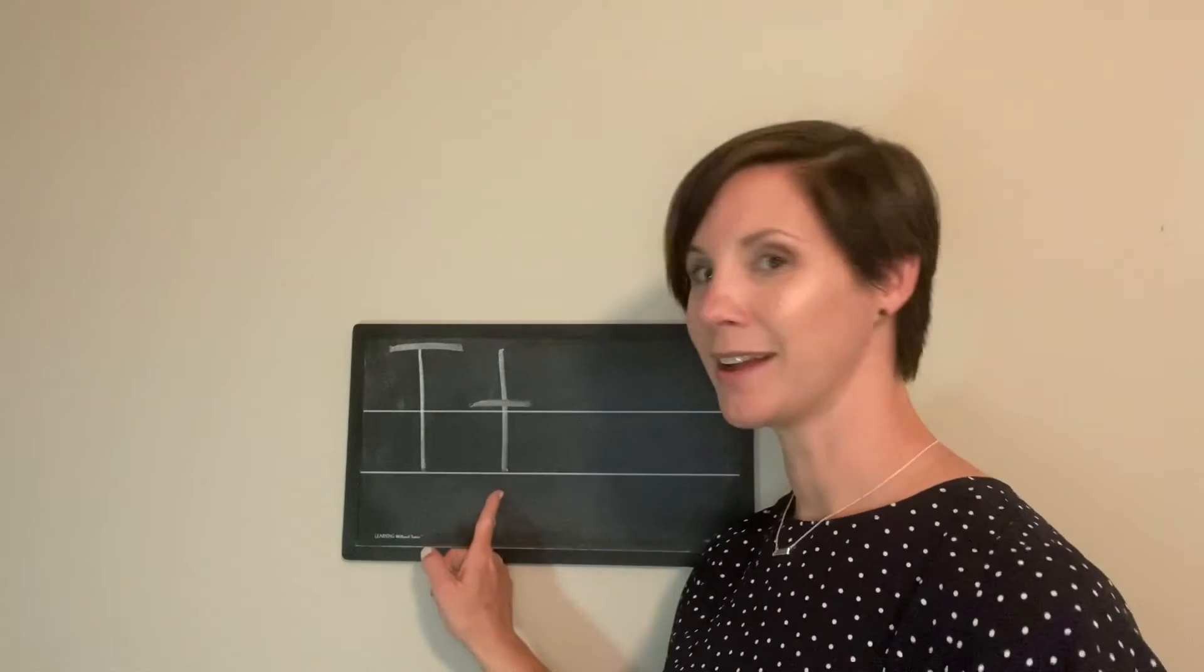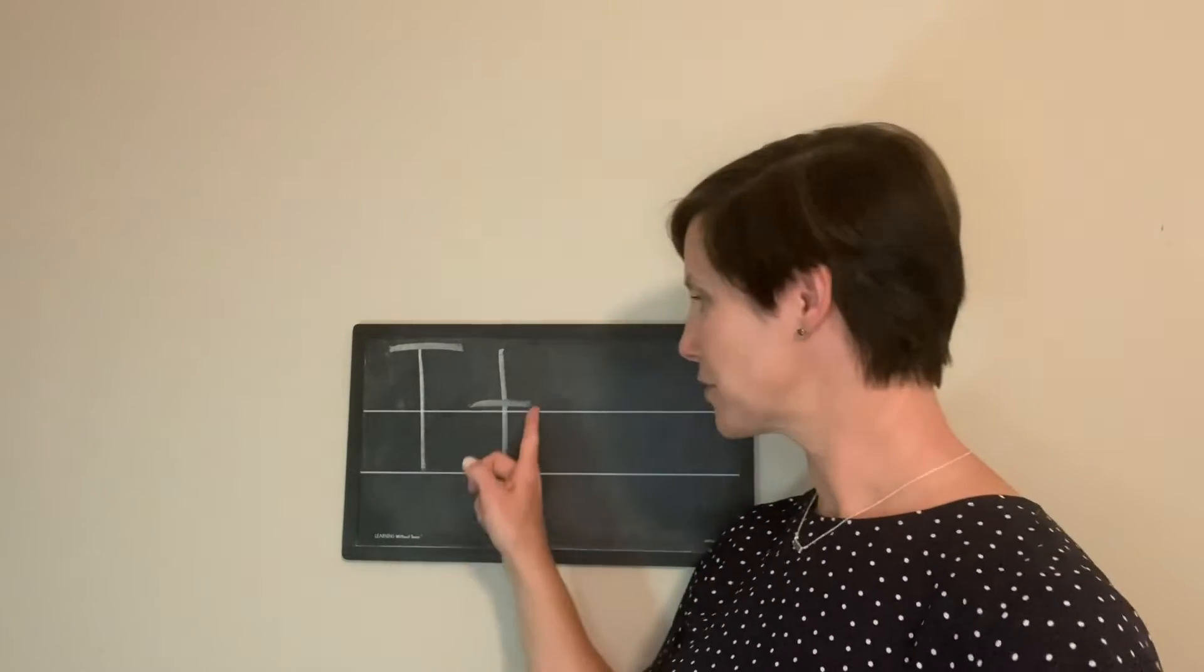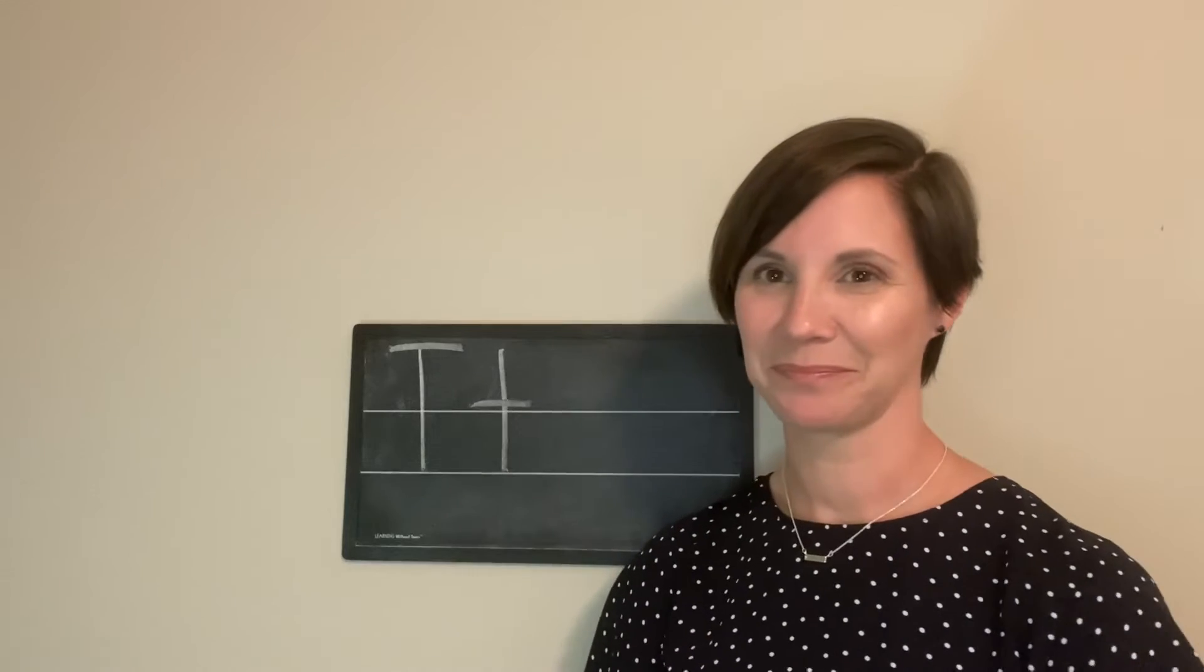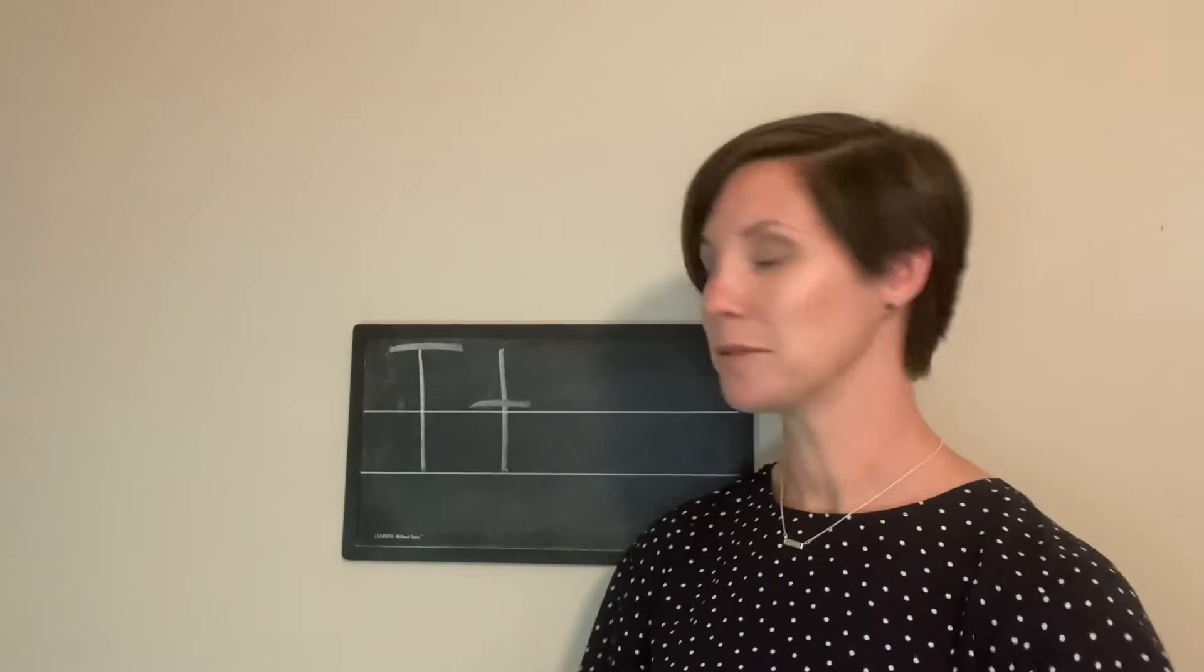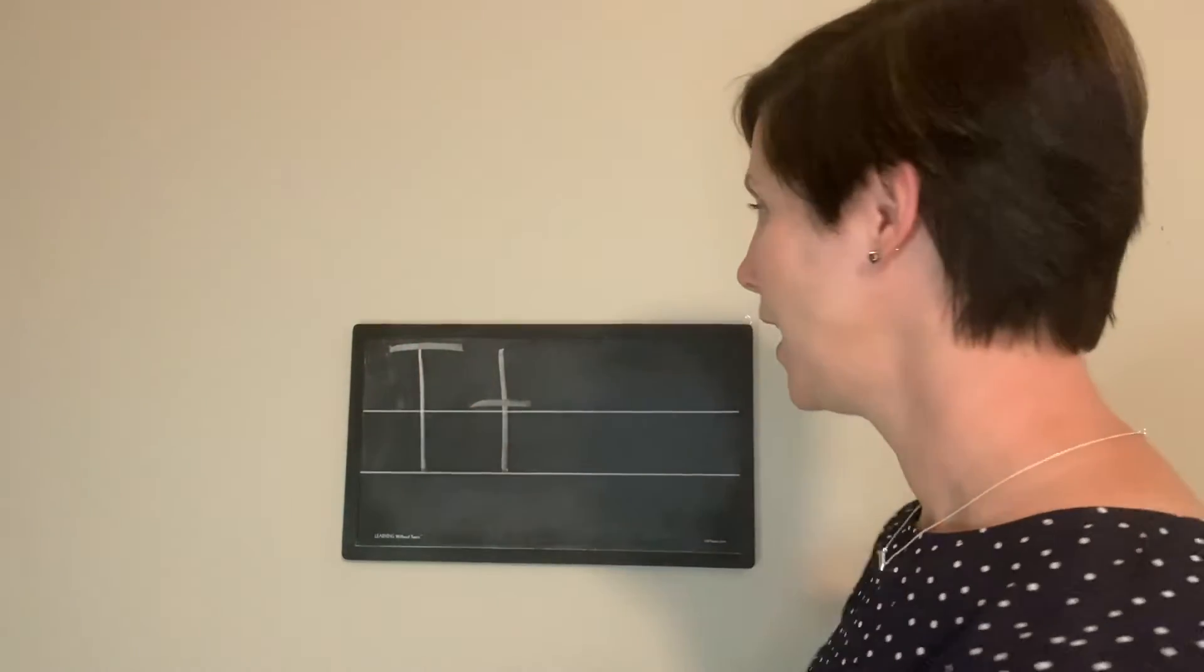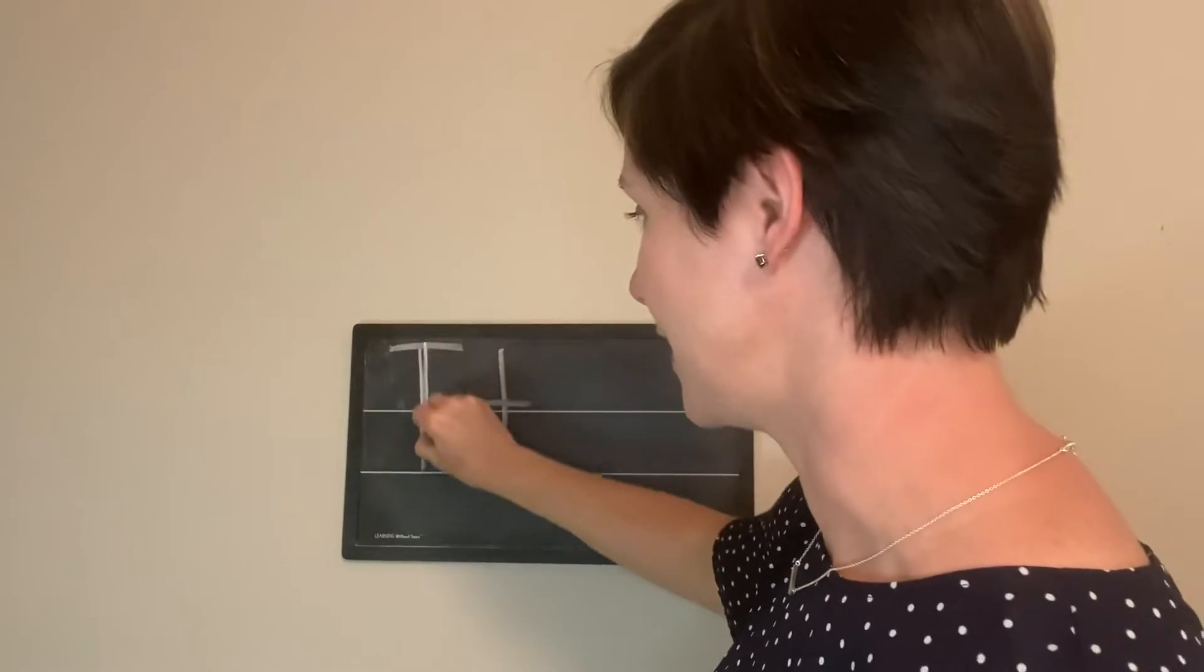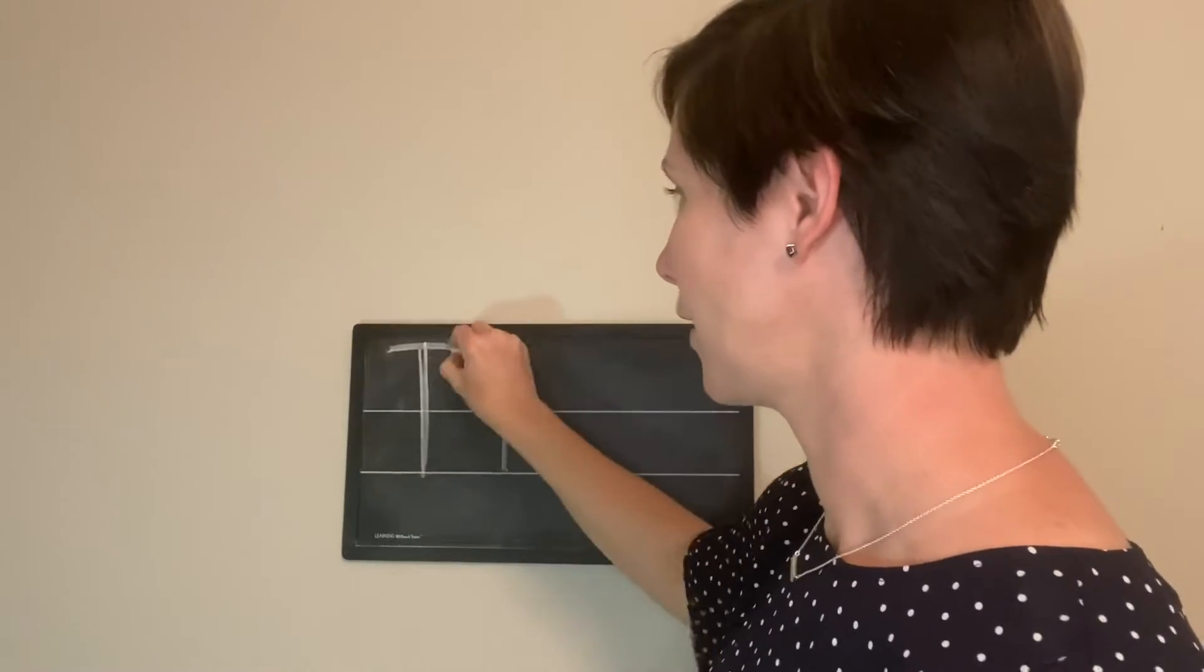We use a big line and a little line, but we make sure that the little line is in the middle and not at the top. So what we want to do is start at the top and we're going to slide down and bump and go across.